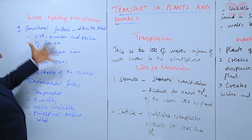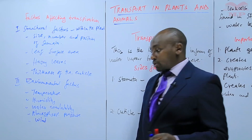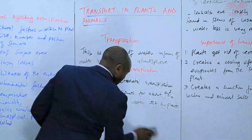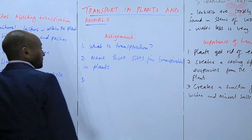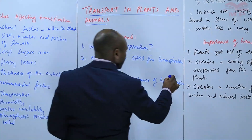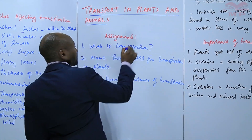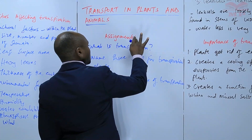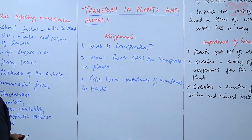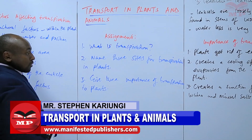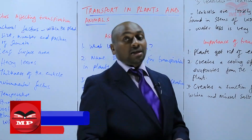Next time, we shall elaborate on these factors by explaining how they affect the rate of transpiration. You are going to have an assignment. The first question: what is transpiration? Number two: name three sites for transpiration in plants. And number three: give three importance of transpiration to plants. We'll stop there until the next lesson. Goodbye.